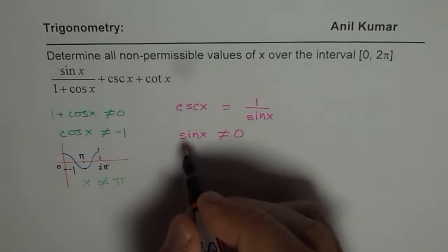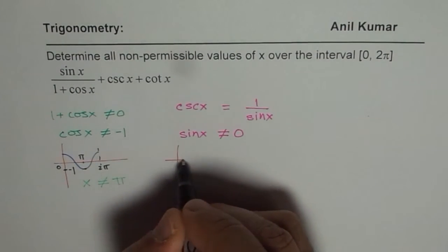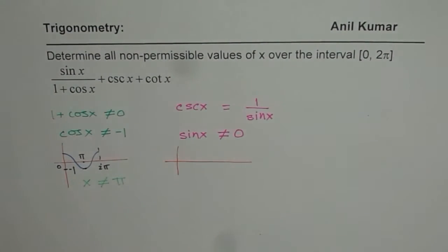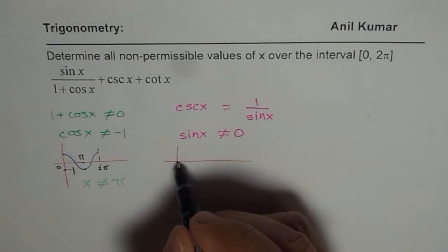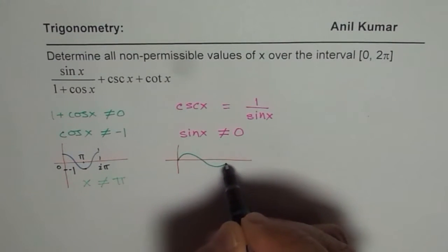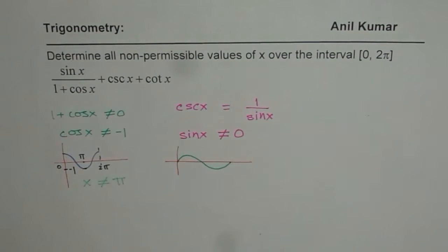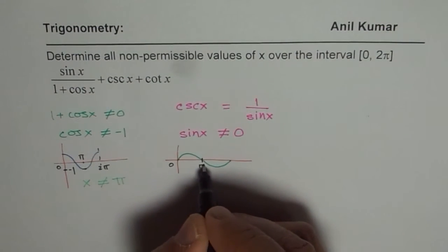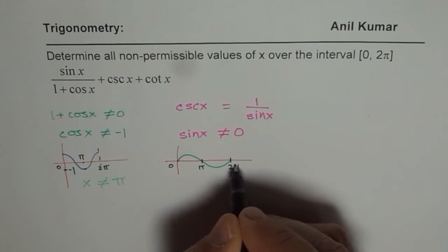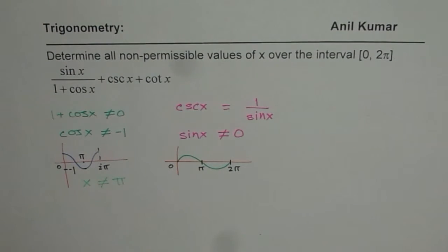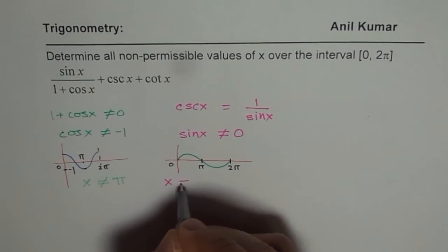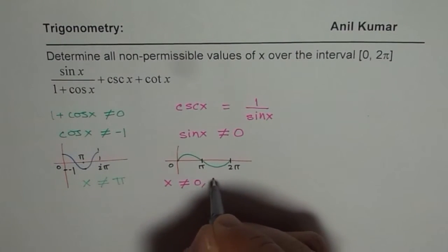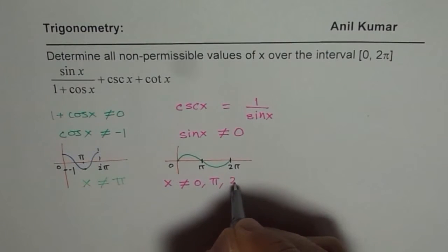So let us again sketch this particular graph. Graph gives you a visual look. So I prefer to sketch graphs. So it starts like this. So that is your sine x graph. Now here you see 0, that is π and this is 2π. So it is 0 for these three values and therefore we give x is not equal to 0, it is not equal to π and it is not equal to 2π.